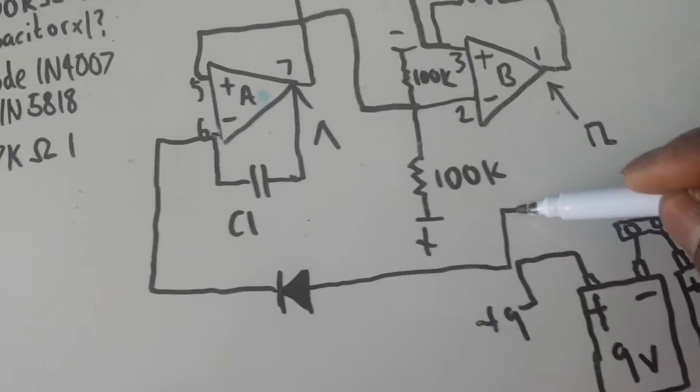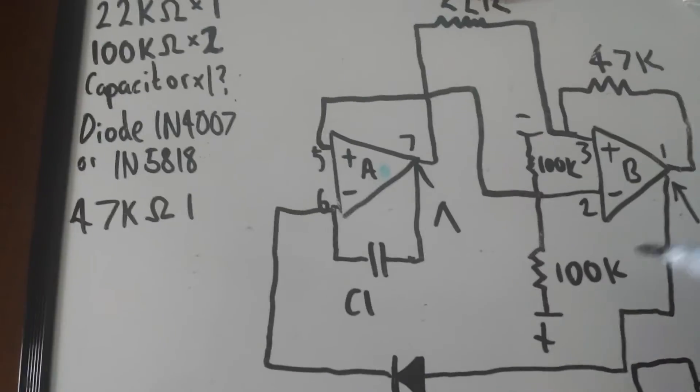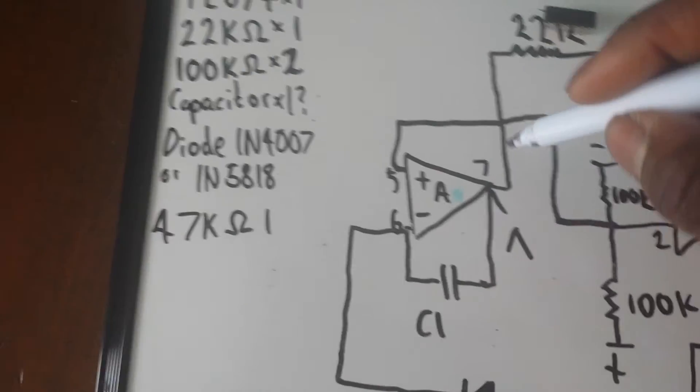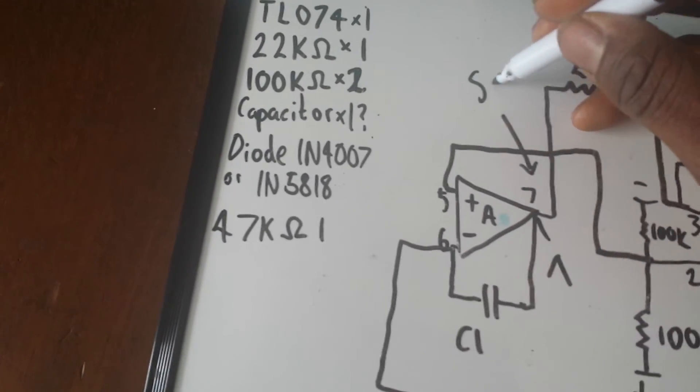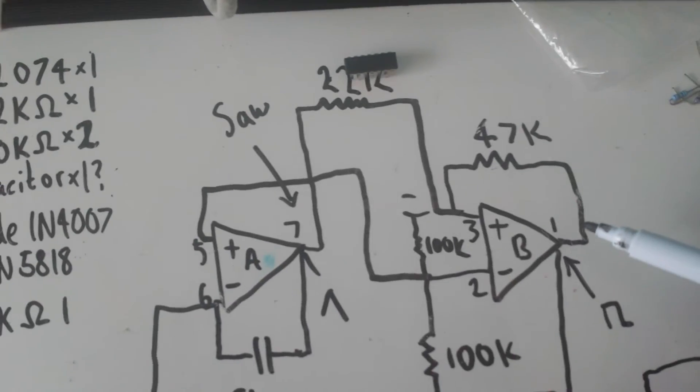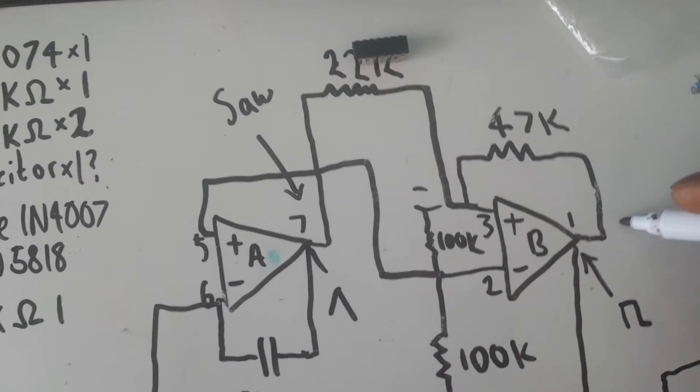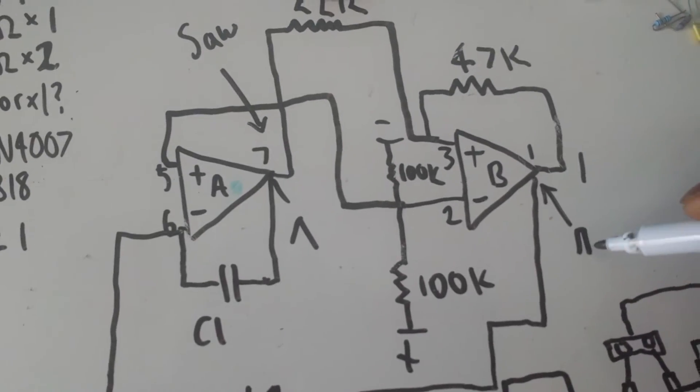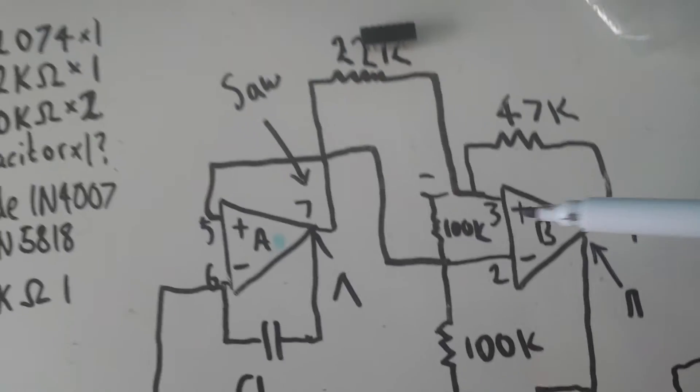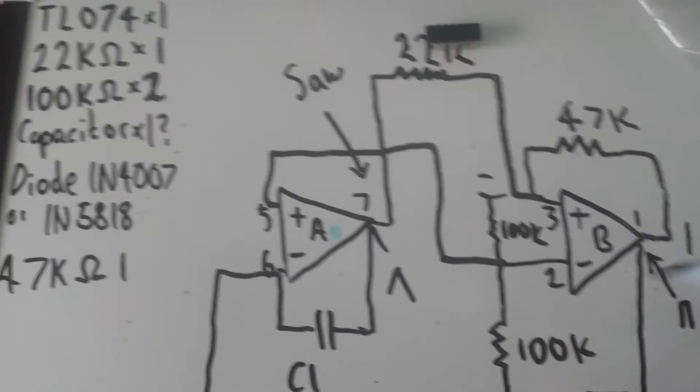Now, pin 7, we will have a saw out, and pin 1, we will now have a very narrow pulse output. It's quite useless to be honest with you. But now we have our saw core.